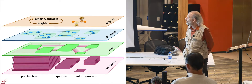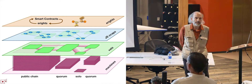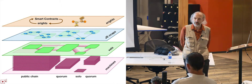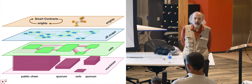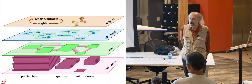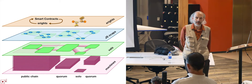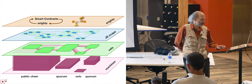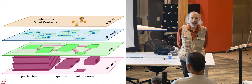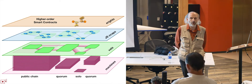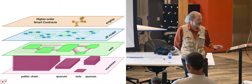I want to call your attention to these smart contracts and e-rights in a loop. E-rights are electronic rights. Smart contracts manipulate rights, but smart contracts in manipulating rights themselves create new rights. And the new rights they create can in turn be manipulated by smart contracts. This gives rise to a new pattern of contracting that we refer to as higher-order contracting, by analogy to the notion of higher-order programming in conventional programming languages.